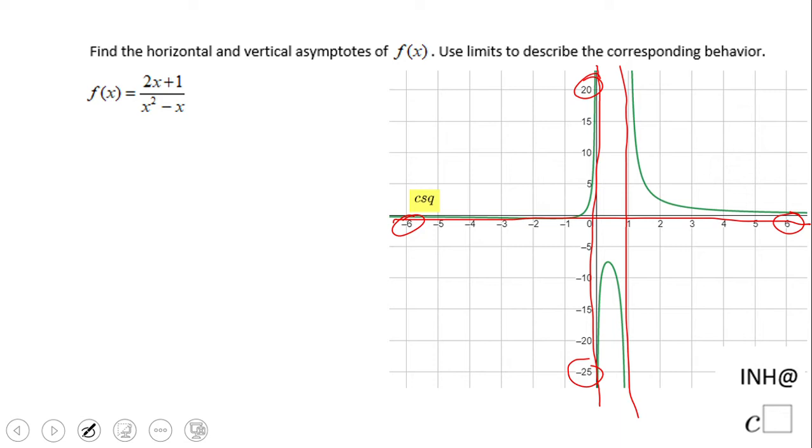Now we're going to use limits. The first one says limit when x approaches infinity of f of x. That means what happens with my function when x is getting larger and larger. You notice the function is going down. It's not going to cross that horizontal asymptote. That limit will be zero.